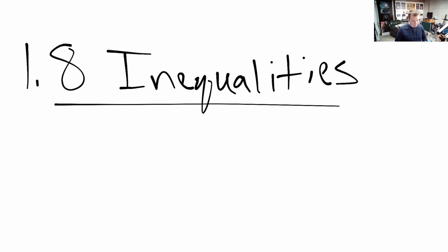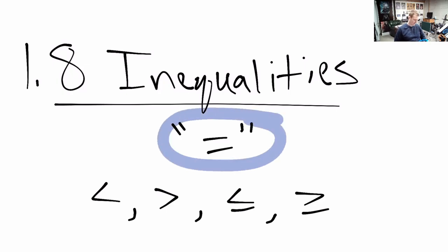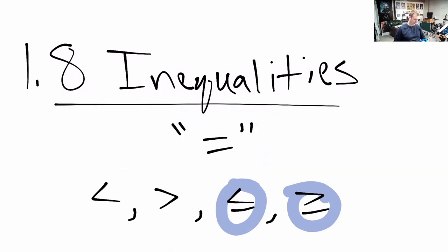Inequalities are very similar to equalities. The only difference is the equals sign is replaced with one of these signs: less than, greater than, less than or equal to, or greater than or equal to. The strict inequalities do not allow for equality, while the non-strict ones include the possibility of equality as well.